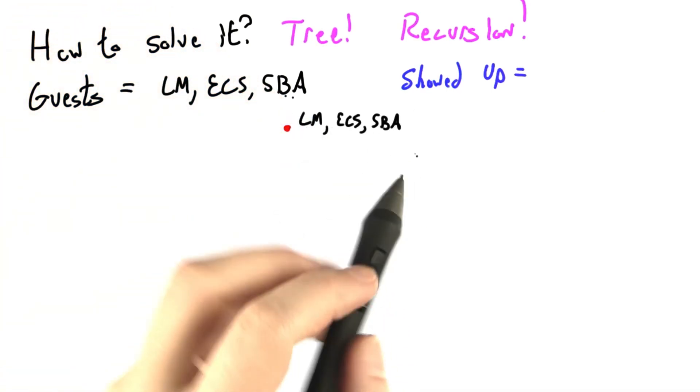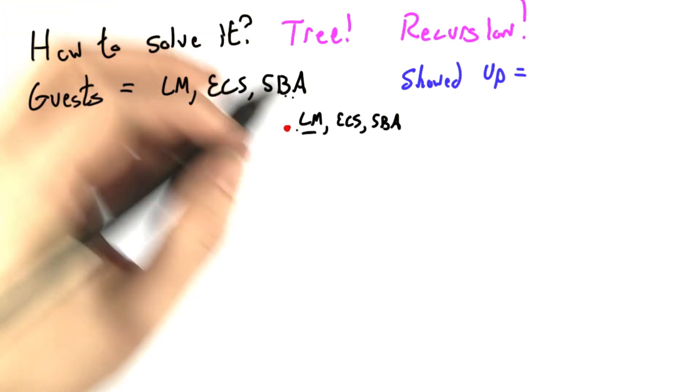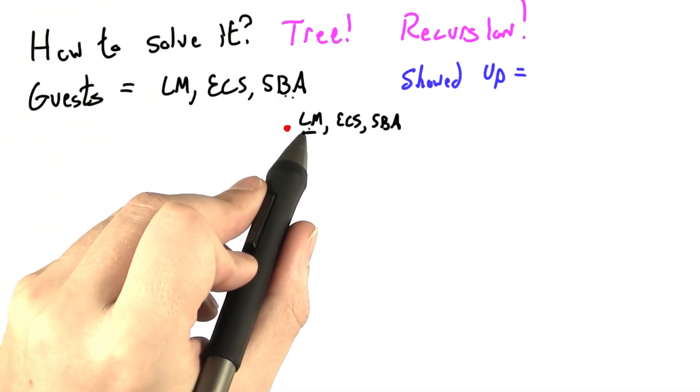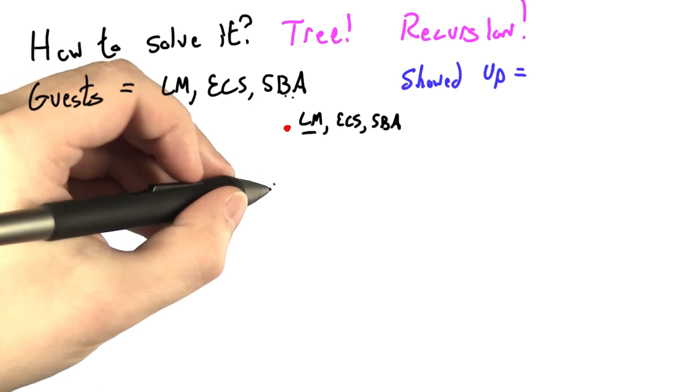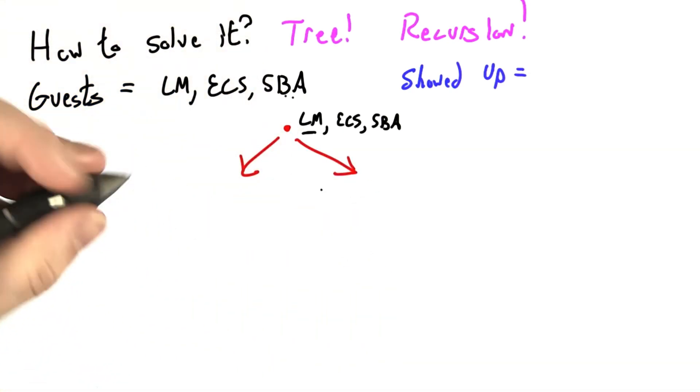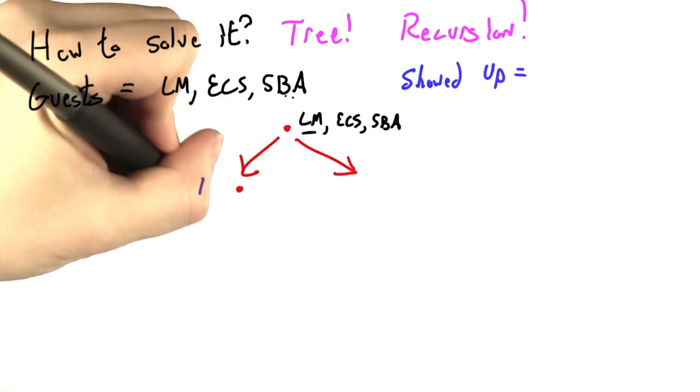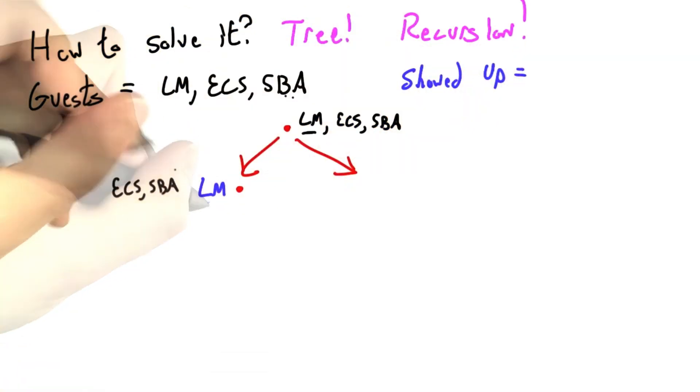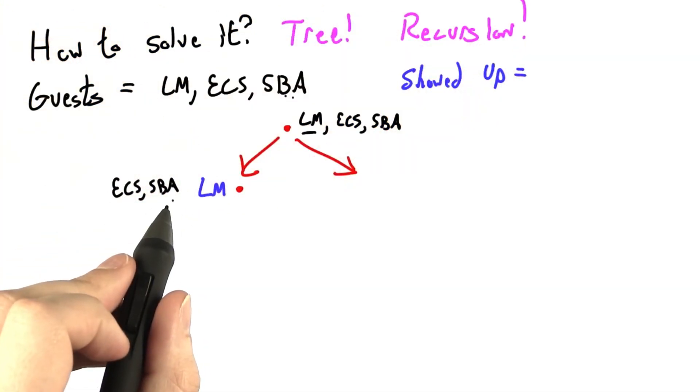Let's say I start out with three guests to invite, and I'm going to pick the first one right now. One possibility is that LM shows up. Another possibility is that LM does not. So now I have two other worlds to consider. In this first one, LM has showed up, and I still have to invite ECS and SBA and see what happens.